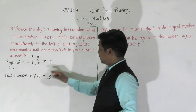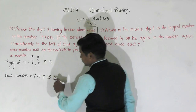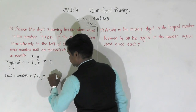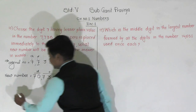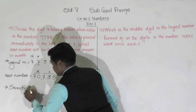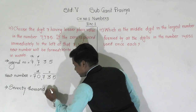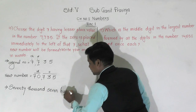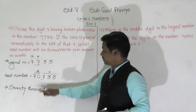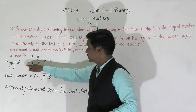We have placed 0 to the left side of that 7. The new number is formed. We have to write the number name. This 1 stands for 10,000. This is the ones group and this is the thousands group. How many thousands? 70,000. And in the ones group there is 735. So the number name of this new number is seventy thousand seven hundred and thirty-five, which is formed by placing 0 to the left of the 7 having lesser place value in the number 7735.